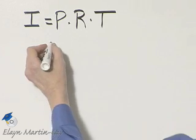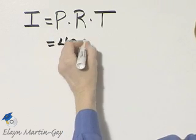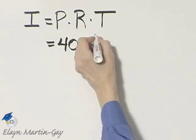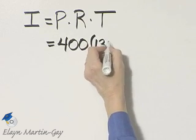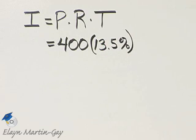What are the values given? The principal is $400, so I'll write down 400. What was the rate? It's 13 and 5 tenths percent. So we'll multiply by 13 and 5 tenths percent, and then be very careful with the time.